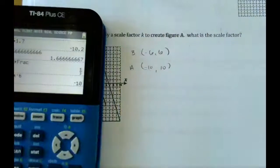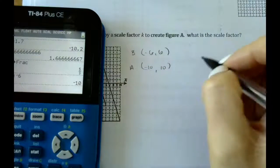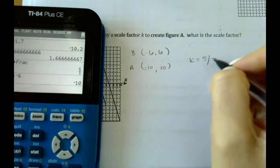This is a really tough one, to be honest with you. So we know that our scale factor, k, is 5 thirds.